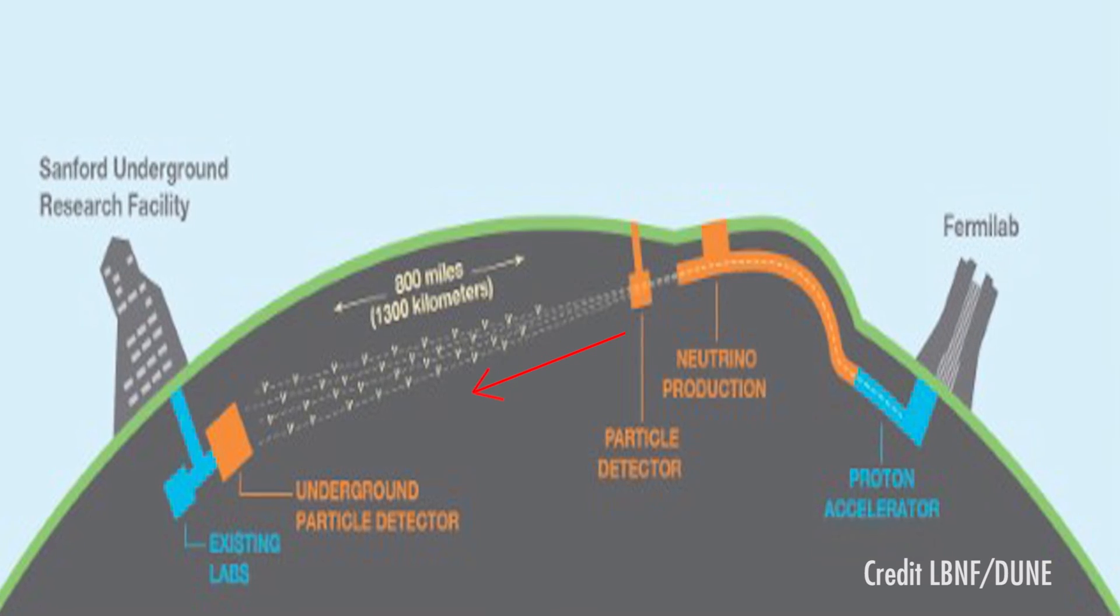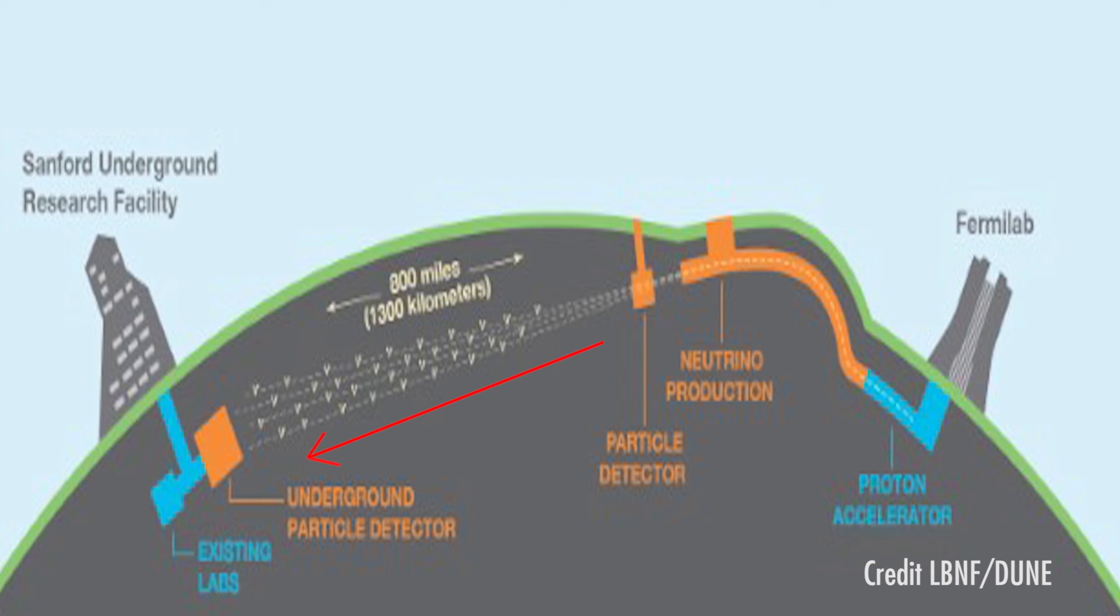What we want to do with our experiment is fire a beam of neutrinos, detect them, and look for the way they change their flavors. Then we do the same experiment with the anti-particle equivalents, the anti-neutrinos. By doing that we can look for direct differences between neutrino oscillations and anti-neutrino oscillations, and detect a fundamental difference between matter and antimatter.